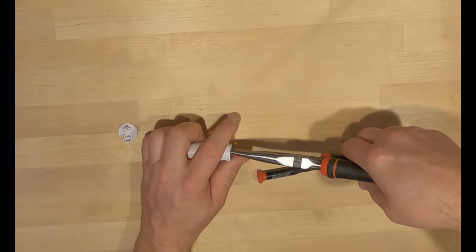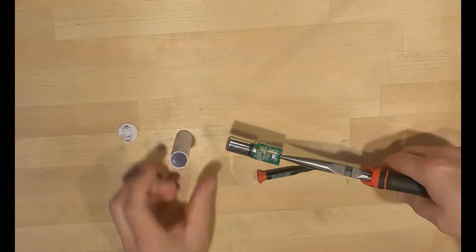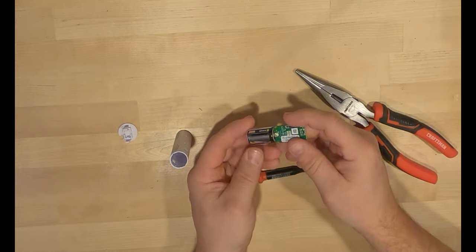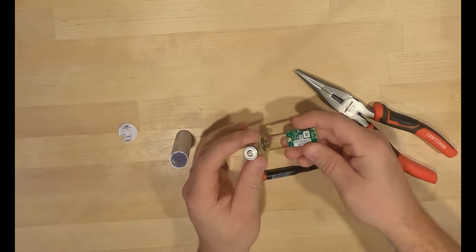And then you want to take the tip of the needle nose and just barely grasp the circuit board and pull that out. And there you'll see your CR2 battery. I'm gonna release it out of here.